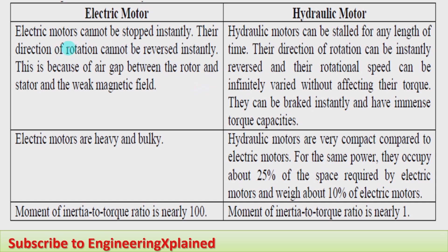The first point is that electric motors cannot be stopped instantly, and their direction of rotation cannot be reversed instantly. This is because of the air gap between the rotor and the stator, which requires time for stopping and reversing the magnetic field.